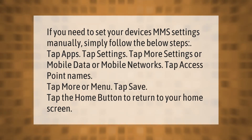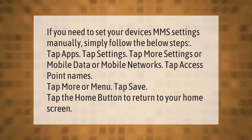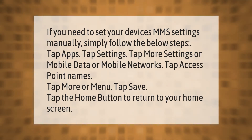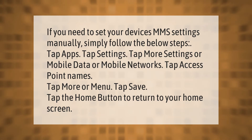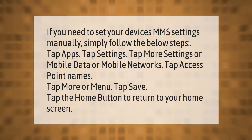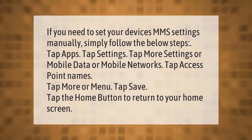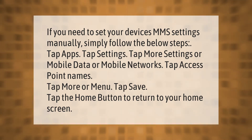If you need to set your device's MMS settings manually, simply follow the below steps: tap Apps, tap Settings, tap More Settings, or Mobile Data, or Mobile Networks, tap Access Point Names, tap More or Menu, tap Save, then tap the Home button to return to your home screen.